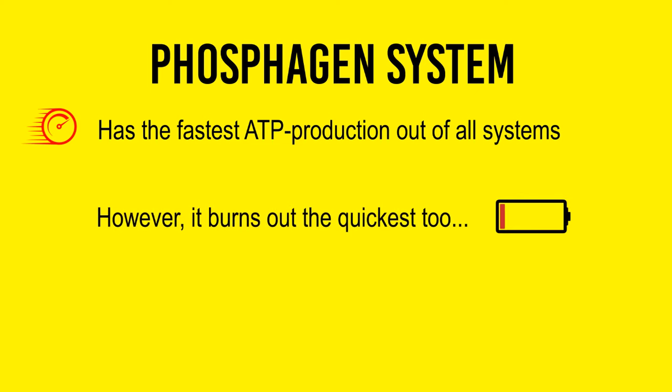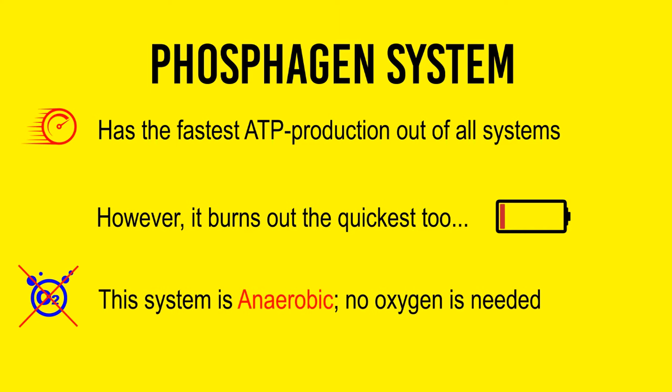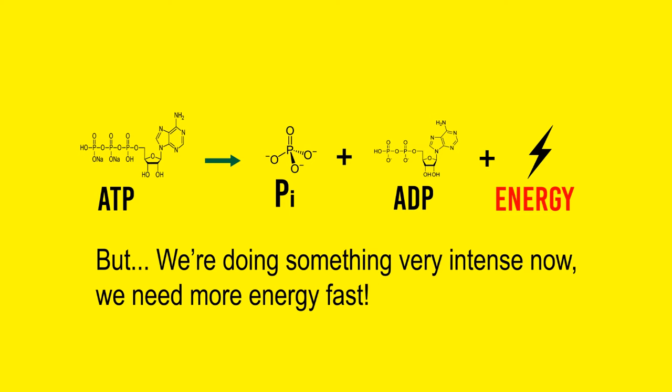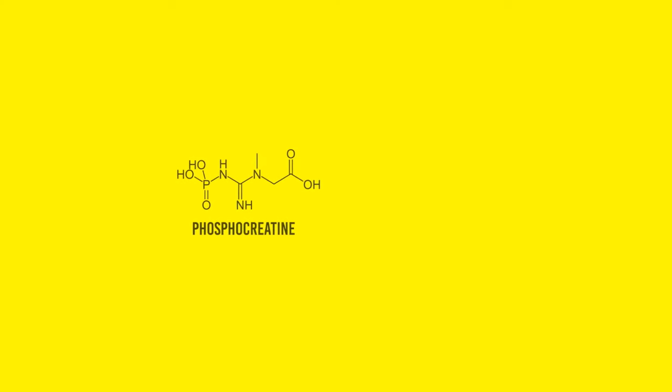The phosphagen system is anaerobic, meaning it's not dependent on oxygen. If you're doing a very high effort task, your body simply won't have enough time to supply muscles with adequate oxygen, so it relies on a system that doesn't need oxygen. This system is not activated unless the intensity is very high. For an action to happen, stored ATP is broken down into ADP and phosphate, releasing energy. When doing something very intense — like a maximal 100 meter sprint or a heavy lift — we need energy very fast.